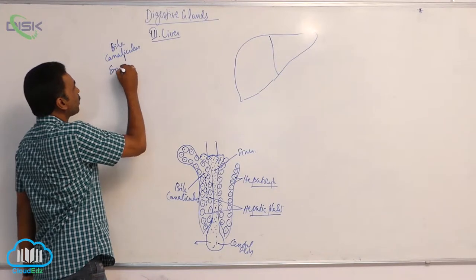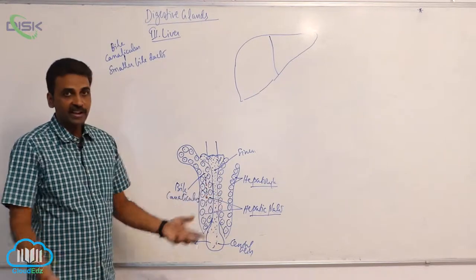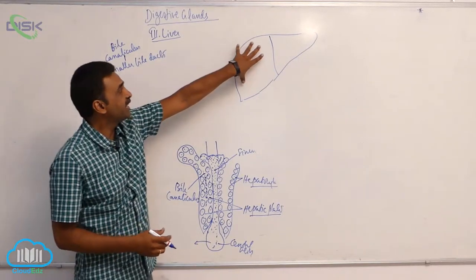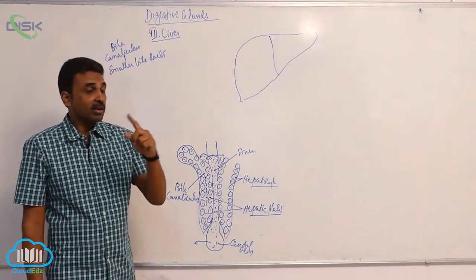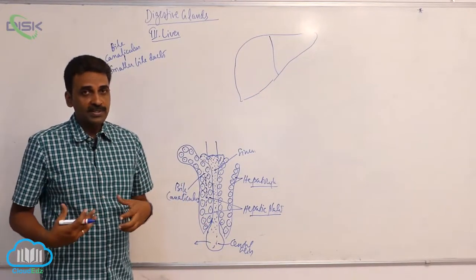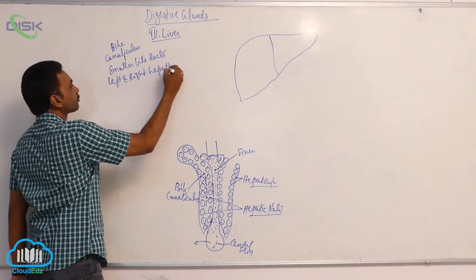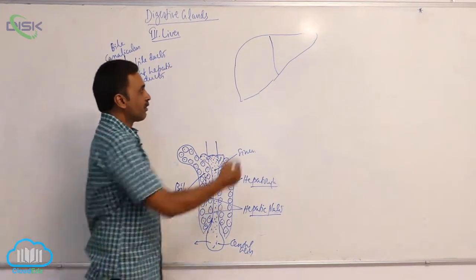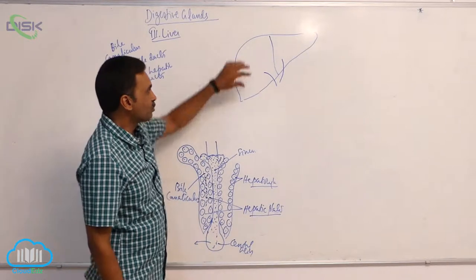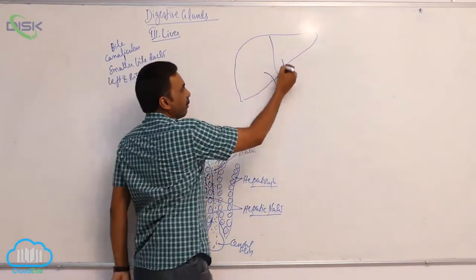From the bile canaliculus, the bile enters into smaller bile ducts. The smaller bile ducts present in each of the lobes combine together to form one left hepatic duct and one right hepatic duct, because there are two major lobes present. So we can see the left and right hepatic ducts.